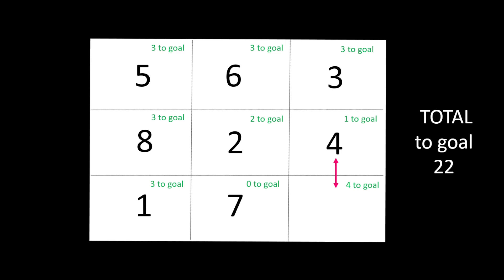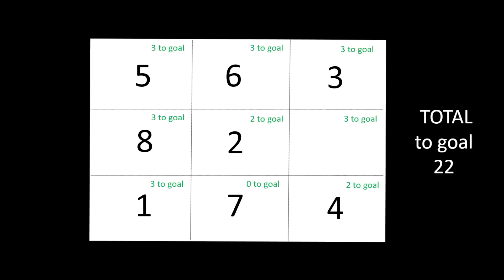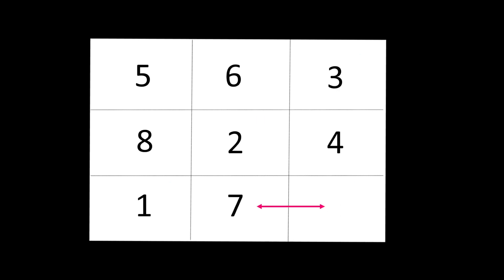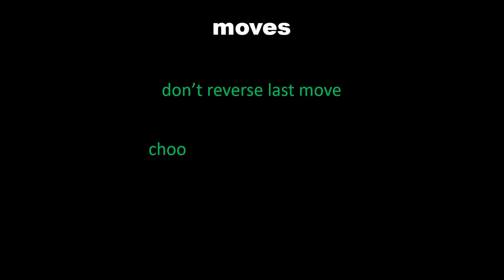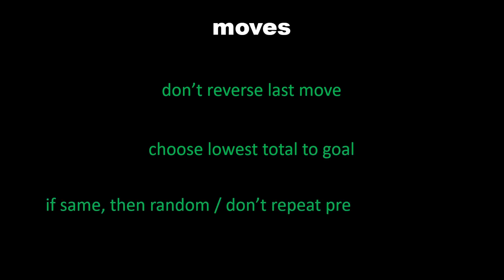If we move the four tile there then the total would be the same, so we could either move the number two tile or the number three tile to reduce the total. Here's another example — we could move the four down to the space and have the same total. Sometimes moves don't increase or decrease the score. When we move, we want the lowest total and we don't want to reverse the last move or revisit the same position.